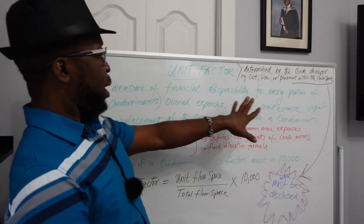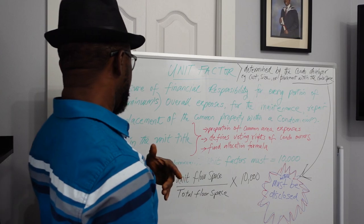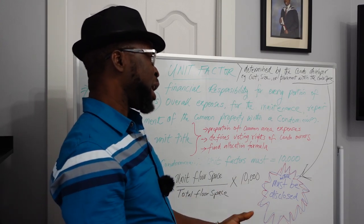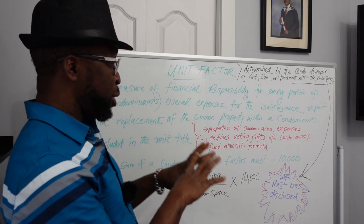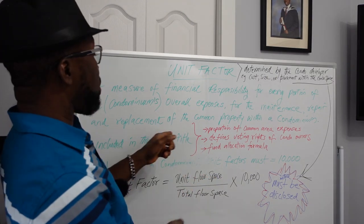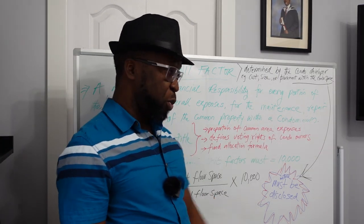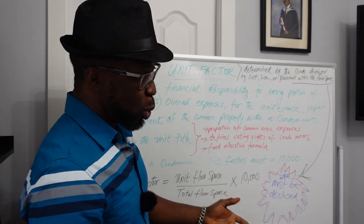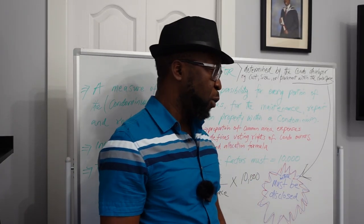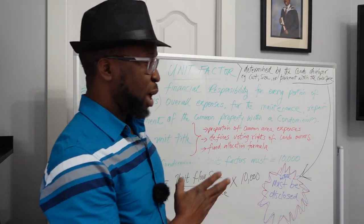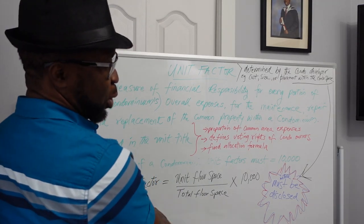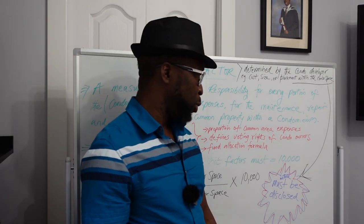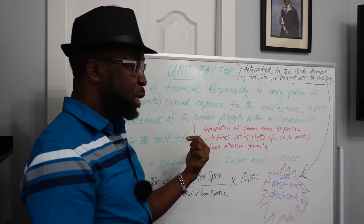Unit factor is basically a measure of financial responsibility for every portion of the condominium. It is used to calculate how to apportion expenses for maintenance and repair for all the common areas — the common property within a condominium. Common property is that area that everybody is responsible for. The portion of responsibility you have in that condominium is always included in the unit title.